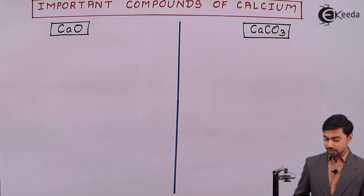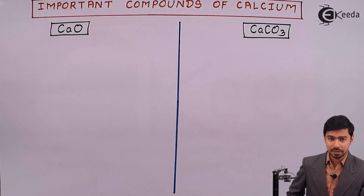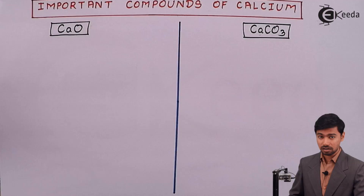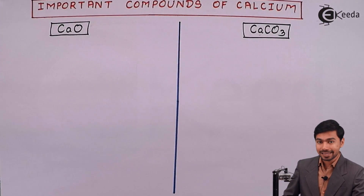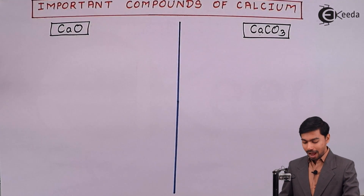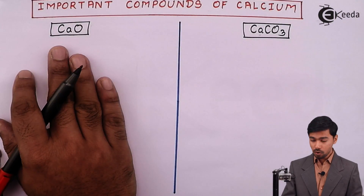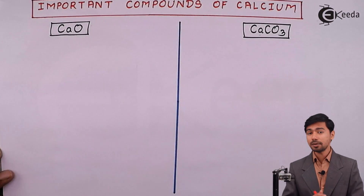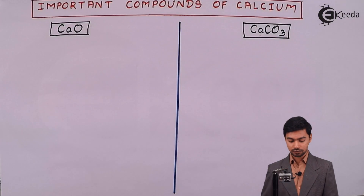Hello everyone. Let us move towards the important compounds of calcium. We have discussed about the important compounds of sodium, which comes from an alkali metal. Now we are moving towards the alkaline earth metal, that means the second group of the periodic table, or we can say the second group of the s-block elements. In the second group there is calcium, which has some important compounds that are very much useful for mankind.